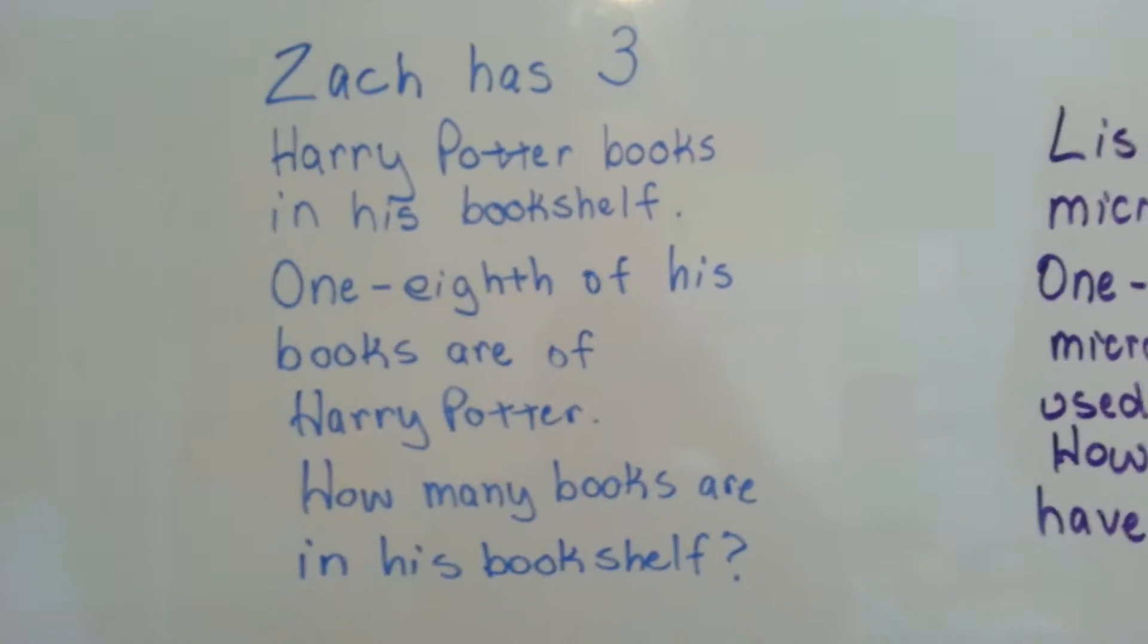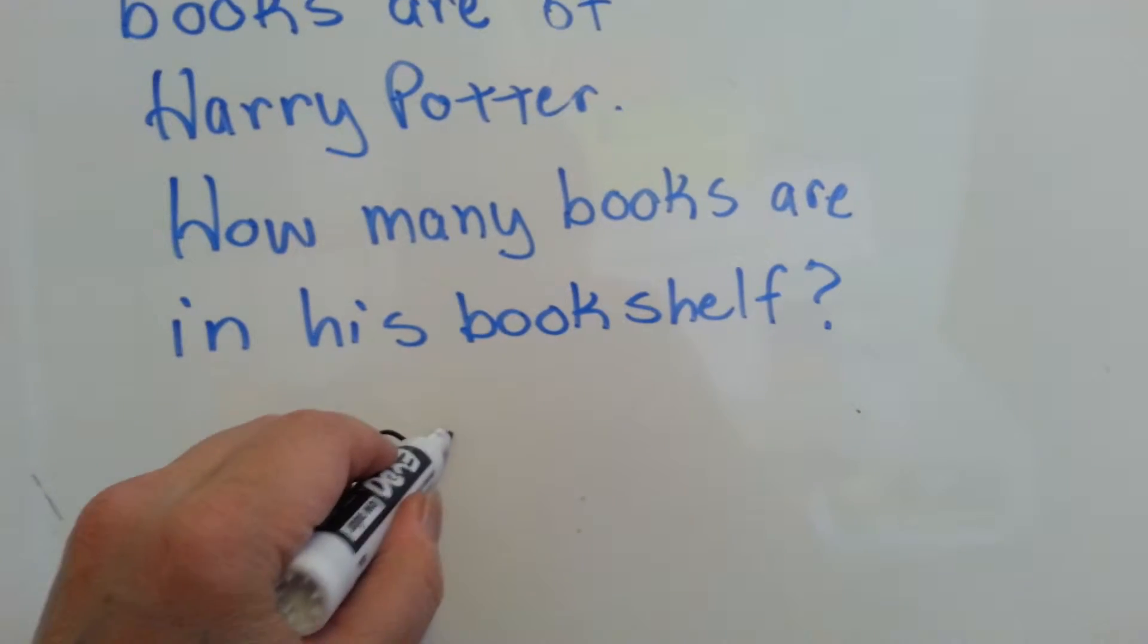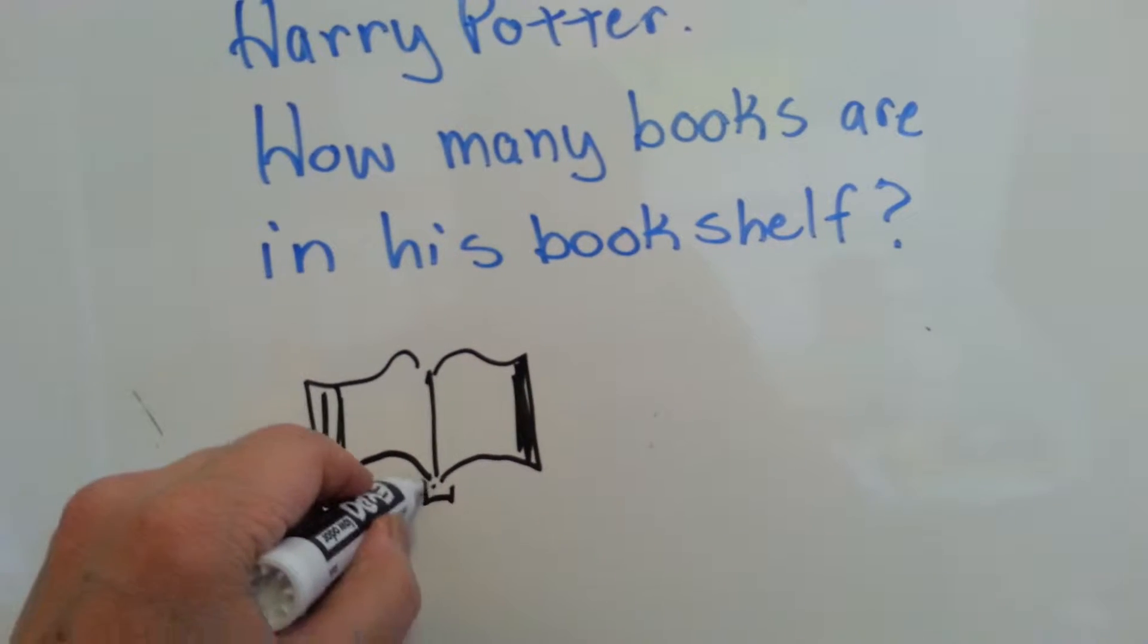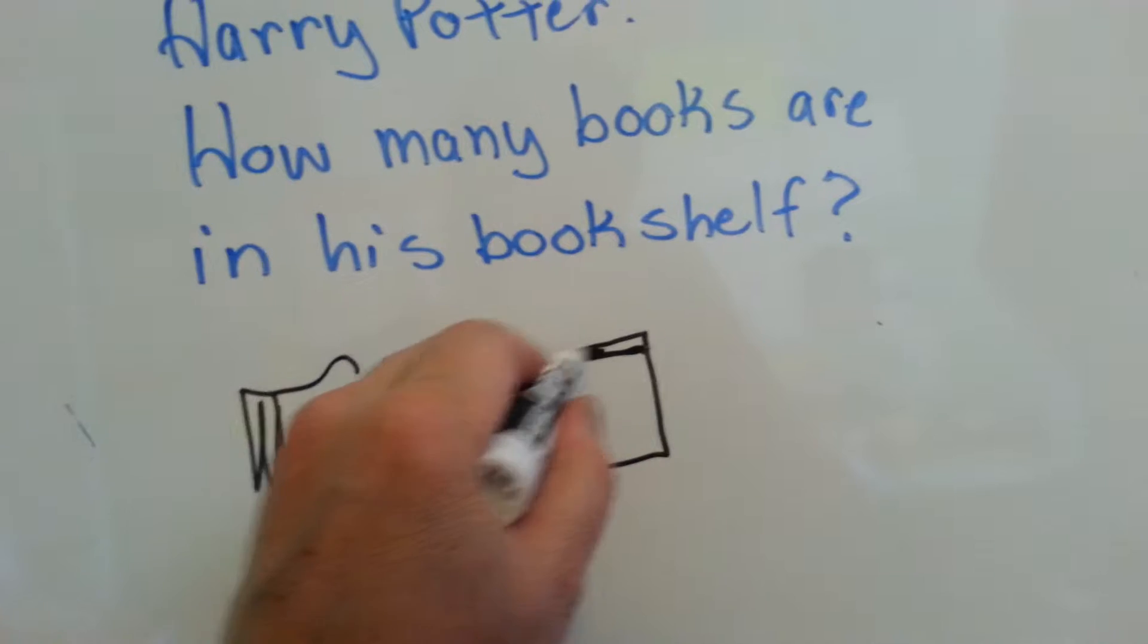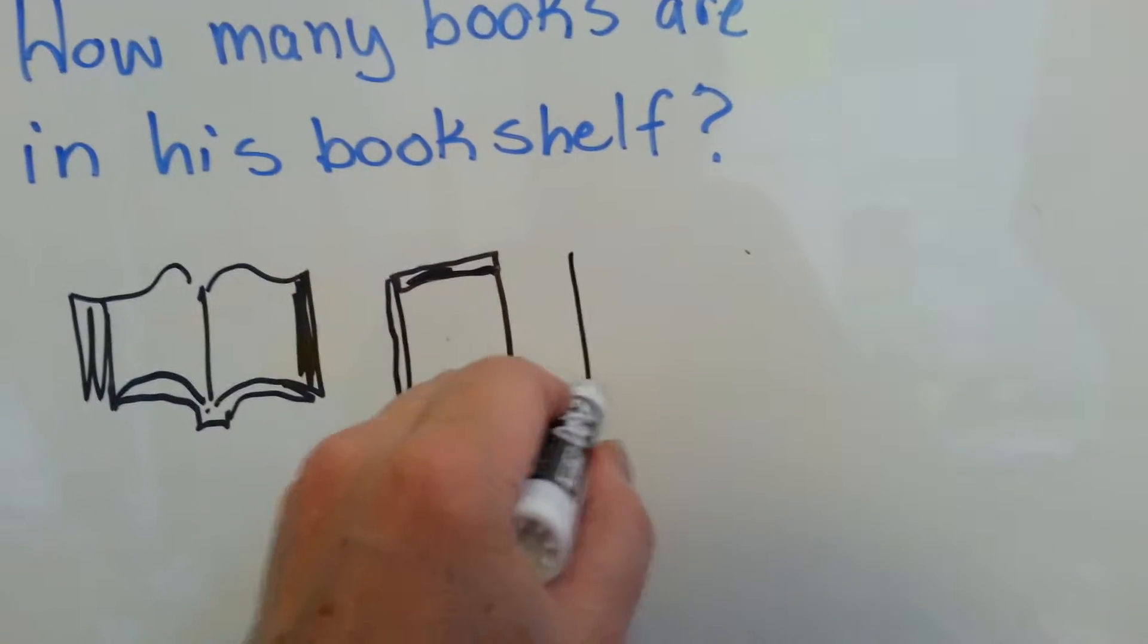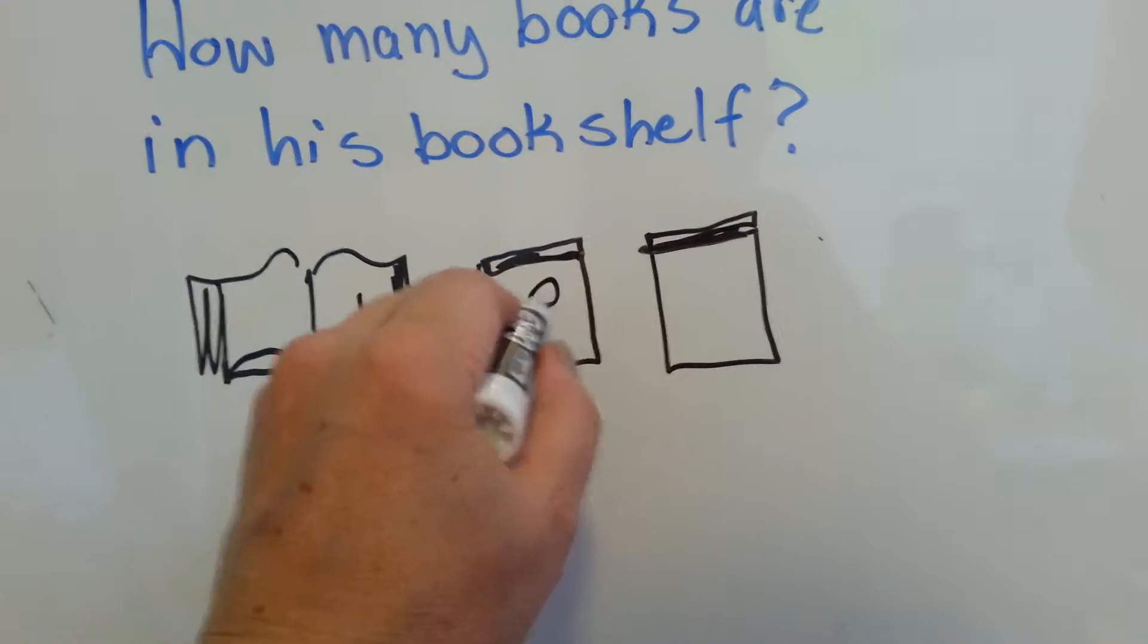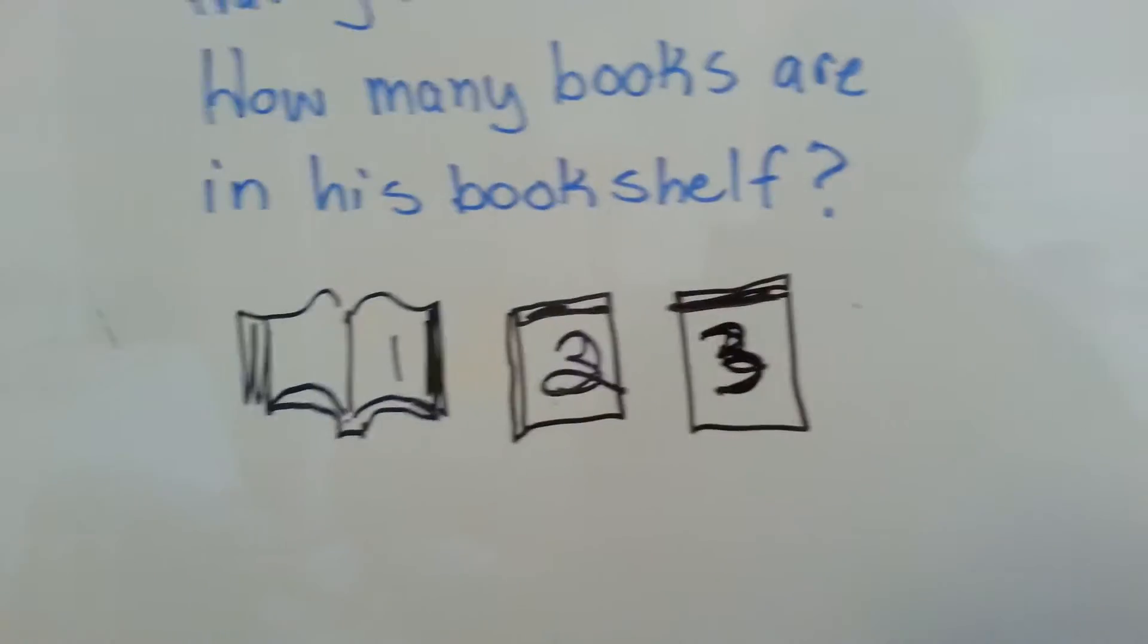Okay. Zack has three Harry Potter books on his bookshelf. All right. So that's one Harry Potter book. There's another one. This one's closed. Here's another one. So here's his three books. So we've got three books. One, two, three.